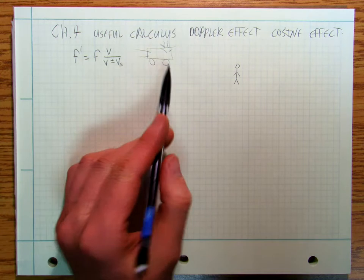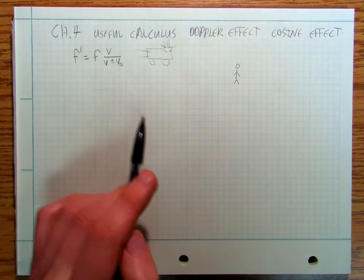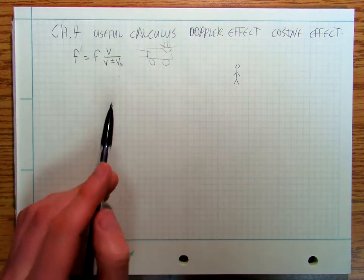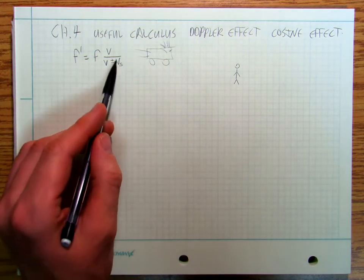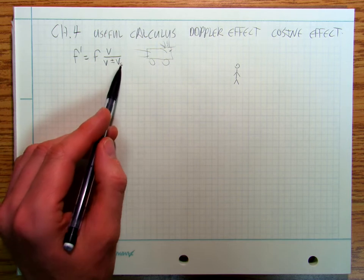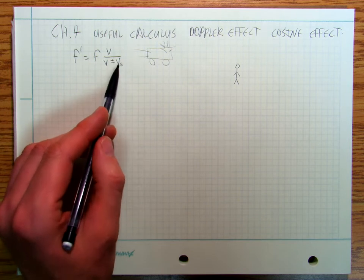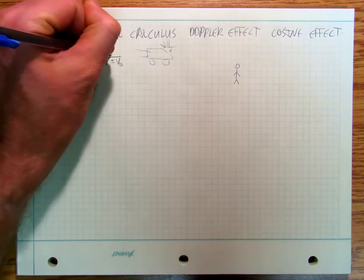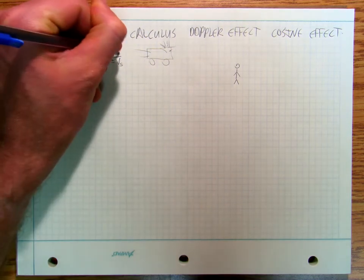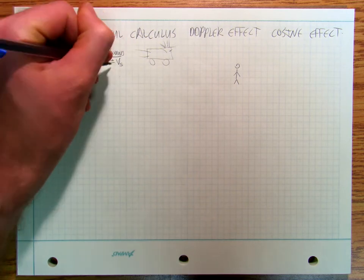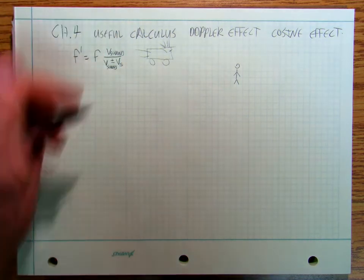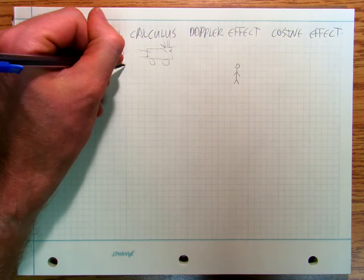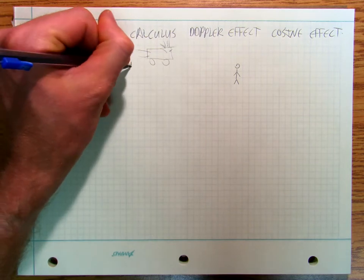The only thing that the Doppler effect depends on is the velocity of the source. So in this equation, this is the velocity of sound, this is the velocity of sound, and that's the velocity of the source.